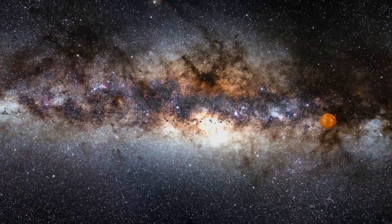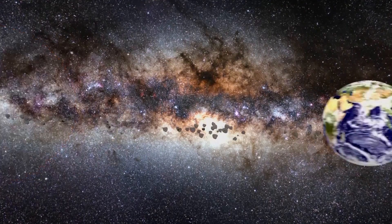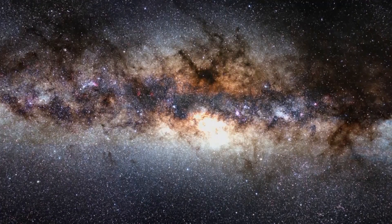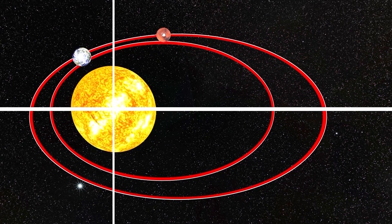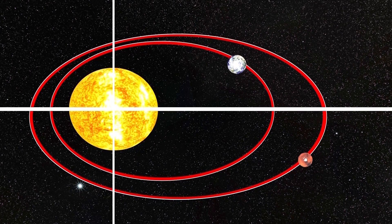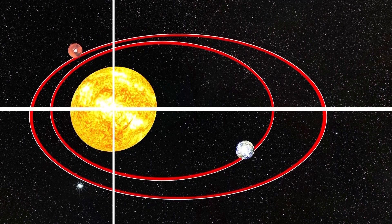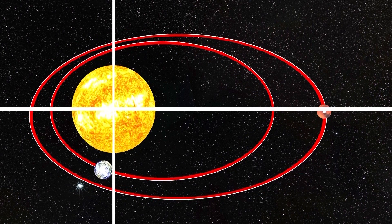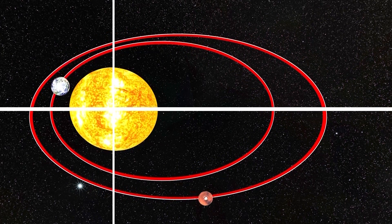The third law: the square of the orbital period of a planet is directly proportional to the cube of the semi-major axis of its orbit. Again, this sounds complex, but really all it's saying is that when you have a bigger orbit, you don't just increase the distance a planet needs to travel — you're also weakening the gravitational force, so it moves much slower. As a rough approximation, if you double the size of the orbit, you triple the time for one orbit. The mass of the planet is also a factor, but distance is by far the most important.